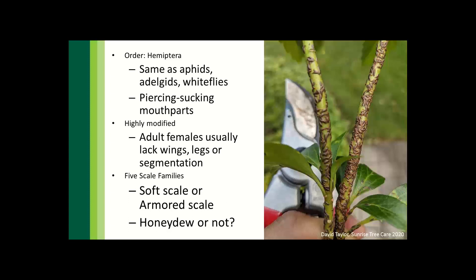Scales are highly modified. Adult females — and this is important for a key management life stage — usually lack wings, legs, or segmentation. So they're not as mobile as whiteflies or aphids. That doesn't mean they can't move around on the plant; they typically don't move from tree to tree. It takes them longer to move, so infestations don't spread across a property as quickly as with other insects.